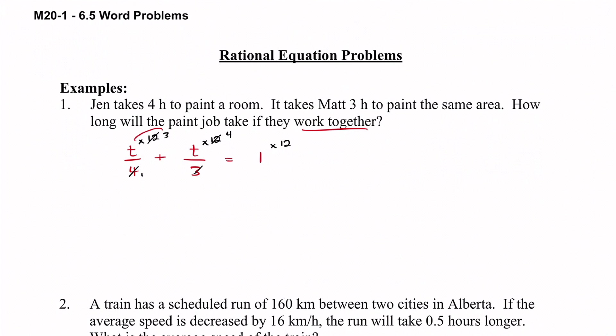What we're going to get out, we're going to have a three times a t. So we got three t plus, and then the next one we got the four times a t, so four t equals, and then one times twelve we just got twelve.